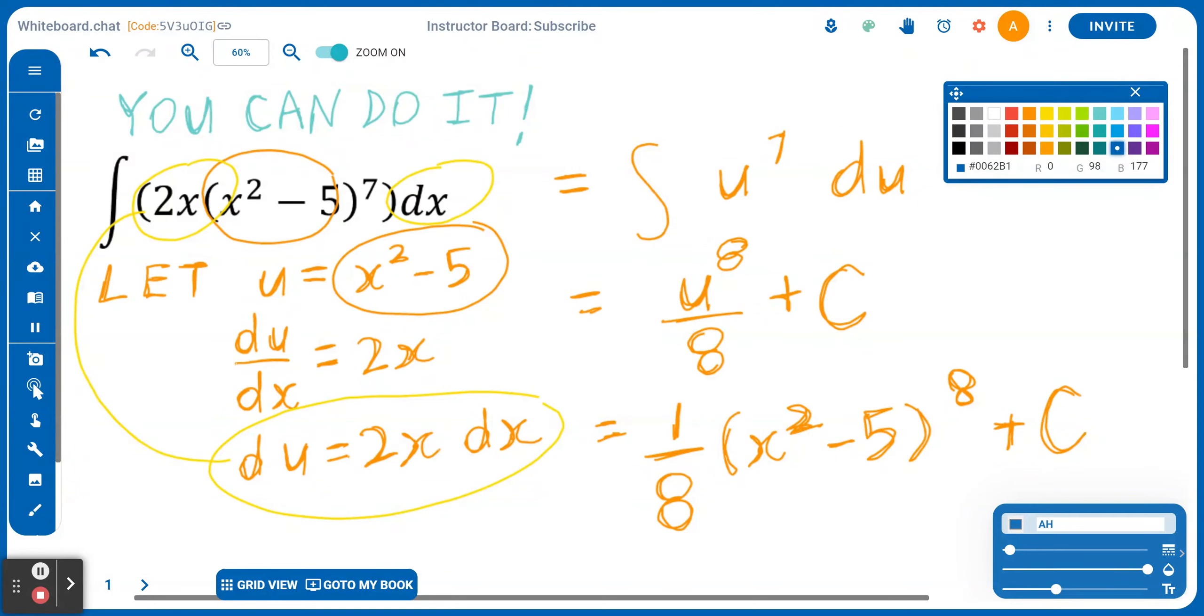Now, I'll double check with you mentally. If you took the derivative of the final answer here, it should give exactly the question back. Now, when you find a derivative of 1 over 8 times x squared minus 5 to the power of 8 plus c, you have to apply the chain rule.